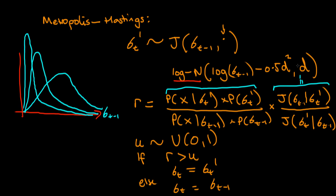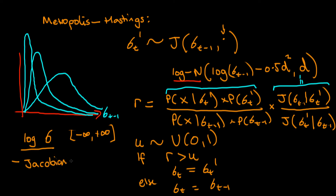I want to finish by mentioning a fourth potential approach that would still allow efficient sampling from the posterior while using the standard Metropolis algorithm. That would be to transform sigma using a transformation that makes the transformed parameter unbounded. The typical way is to take the log of the parameter and sample from that instead, because the log of a positive number is bounded between minus infinity and plus infinity — in other words, unbounded. If you do this, it's important to use a Jacobian transformation, because you're taking a non-linear transformation of a variable. But if you account for the Jacobian, you can just use the standard Metropolis algorithm with a symmetric jumping distribution.